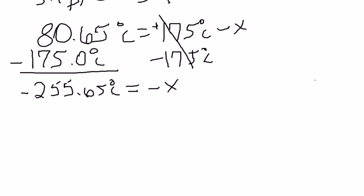We cannot have a negative X, so we're going to rewrite this as 255.6 degrees Celsius is equal to X. And this is our final answer for the initial temperature.